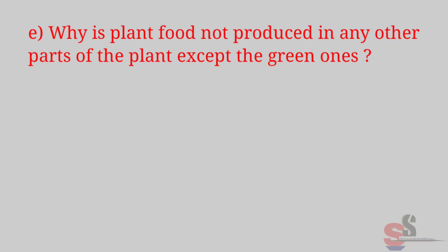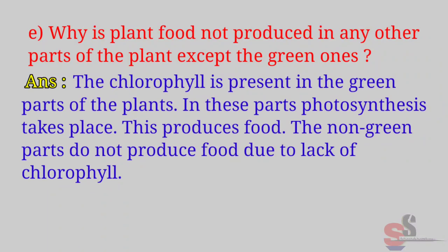E. Why is plant food not produced in any other parts of the plant except the green ones? Answer: Chlorophyll is present in the green parts of the plants. In these parts, photosynthesis takes place, which produces food. The non-green parts do not produce food due to lack of chlorophyll.